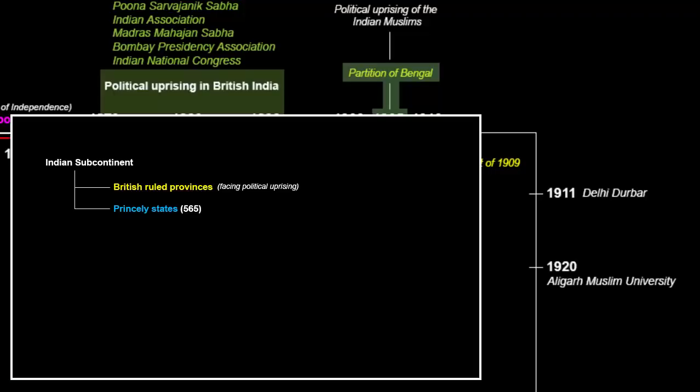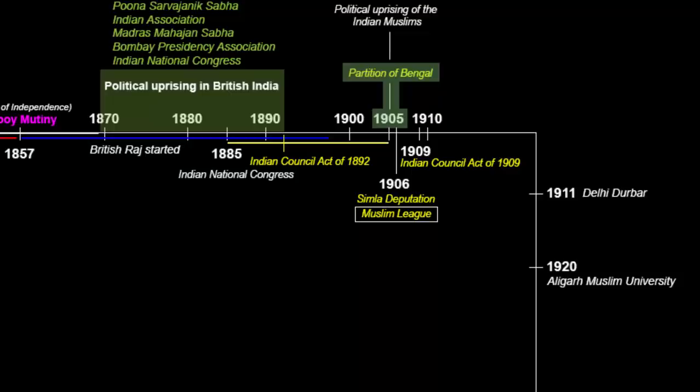All these political movements were taking place in the British controlled provinces, not in the princely states. The rulers of princely states were aware of what was happening but could not grant political rights or allow nationalism to enter the minds of their people — that would cause rebellion. It was in the rulers' best interest to keep their kingdoms unexposed to nationalist movements. Hence there was no political uprising in the princely state of Jammu and Kashmir till the 1930s.